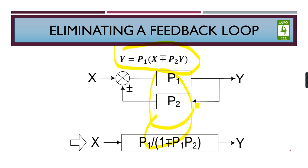This block diagram can be redrawn as P1 divided by 1 minus plus P1, P2. If this feedback path is positive, then we will use a negative sign. For negative path, we will use a positive sign.